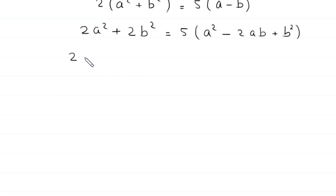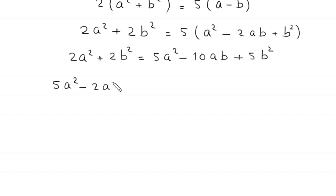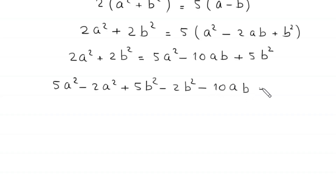So 2a² + 2b² equals 5 times (a² - 2ab + b²), which distributes to 5a² - 10ab + 5b². We move the 2a² and 2b² terms to the right-hand side.